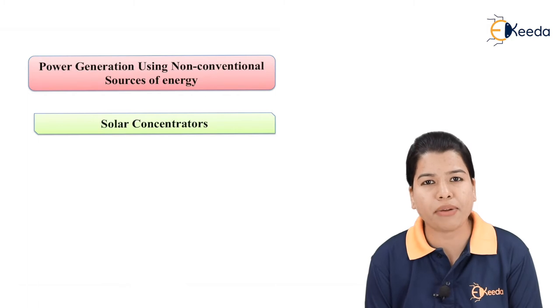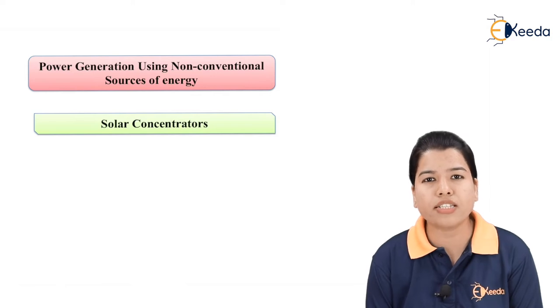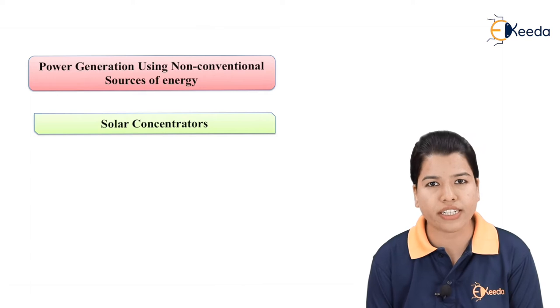Sometimes we require the temperature range which might be greater than 100 degree centigrade. The basic principle here is we have to concentrate the solar radiation so that the radiation energy can be utilized at its maximum. For this purpose, instead of solar plate collectors, solar concentrators are used.